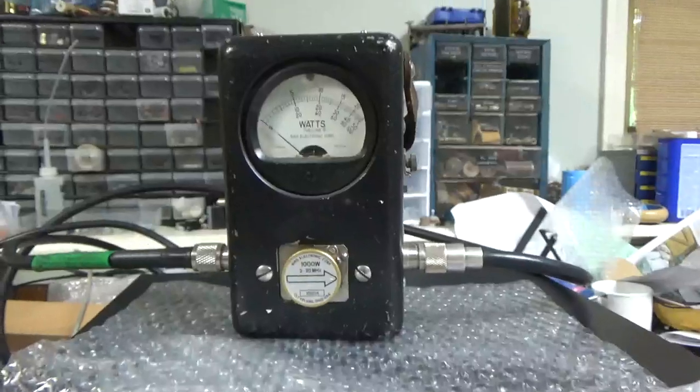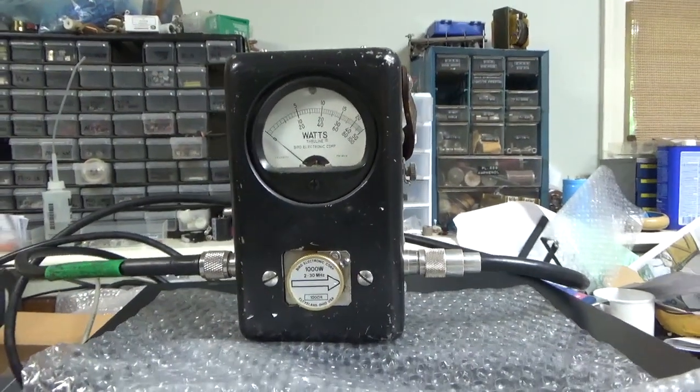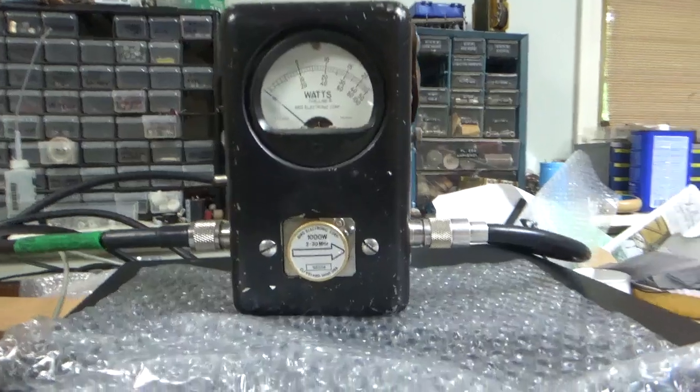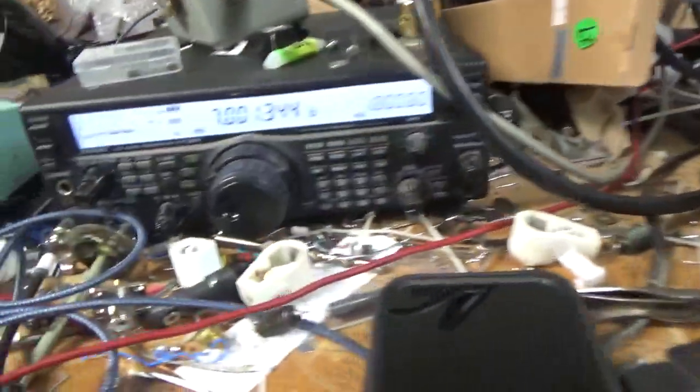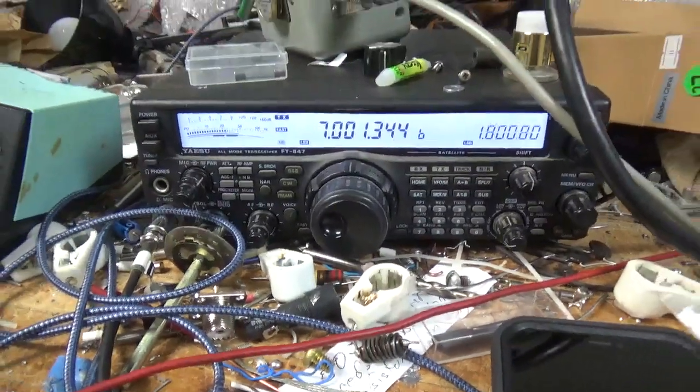1KW slug, Bird 43 with the PEP kit on, radio set to roughly 50 watts or so.